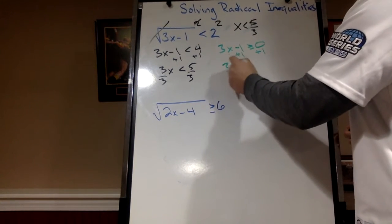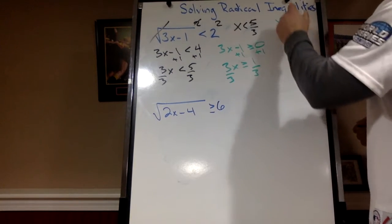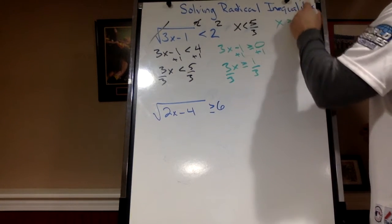Plus 1. Plus 1. 3x is greater than or equal to 1. Divide by 3. And I get x is greater than or equal to 1 third.